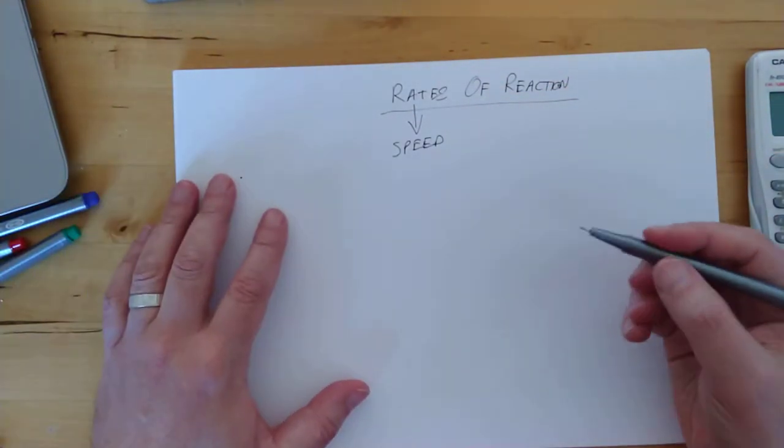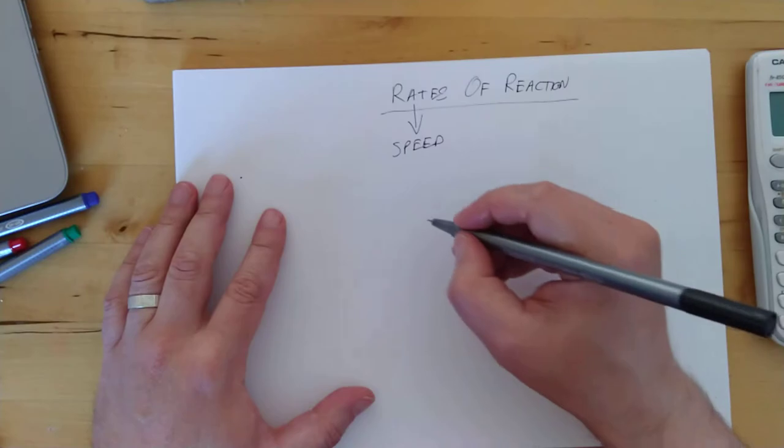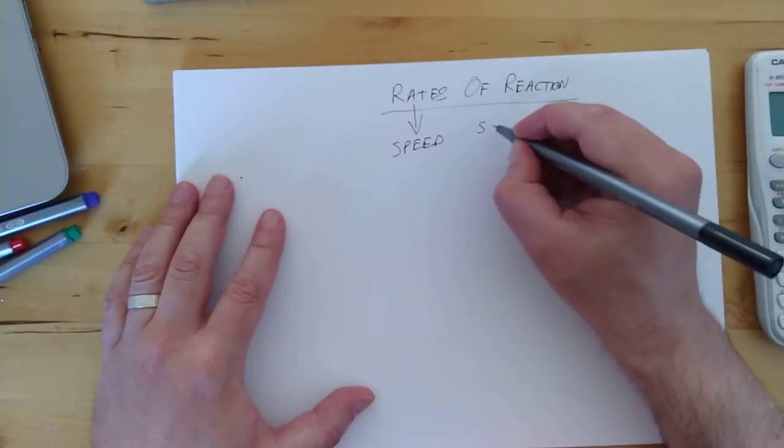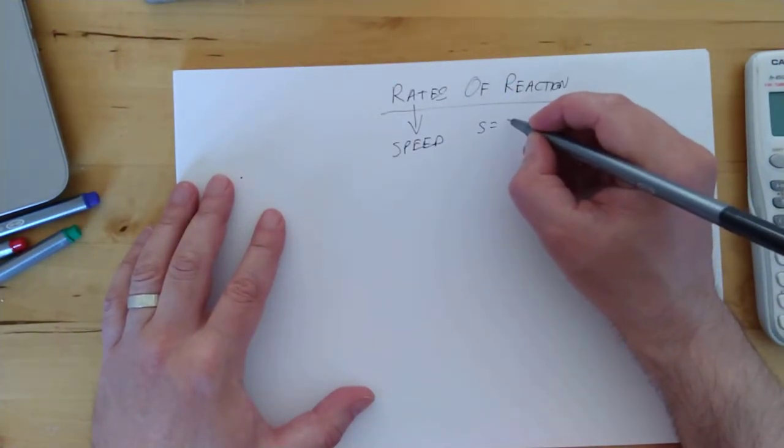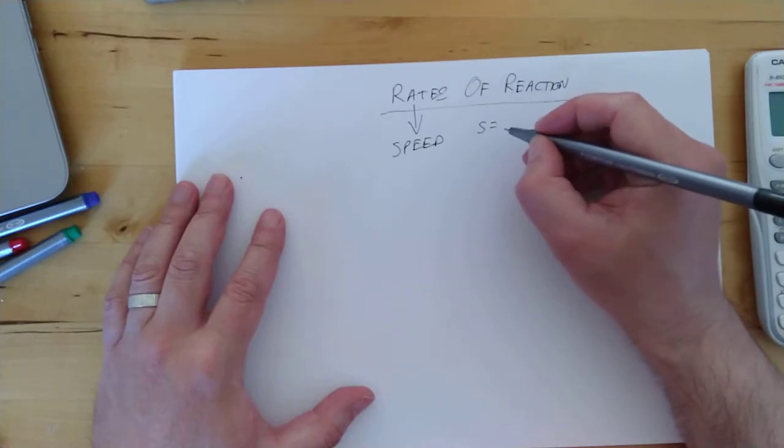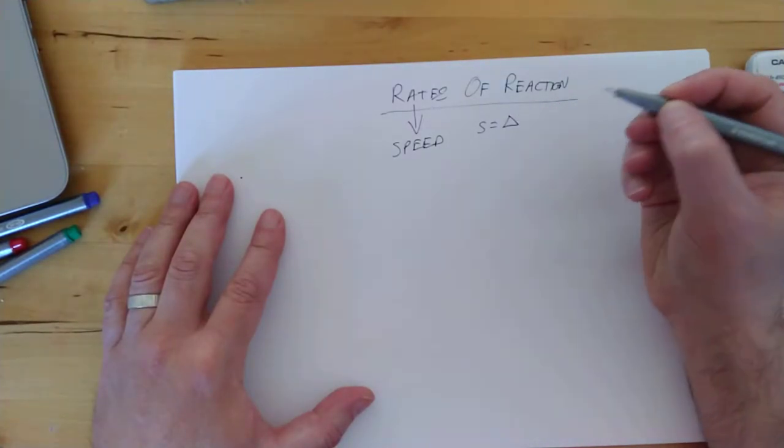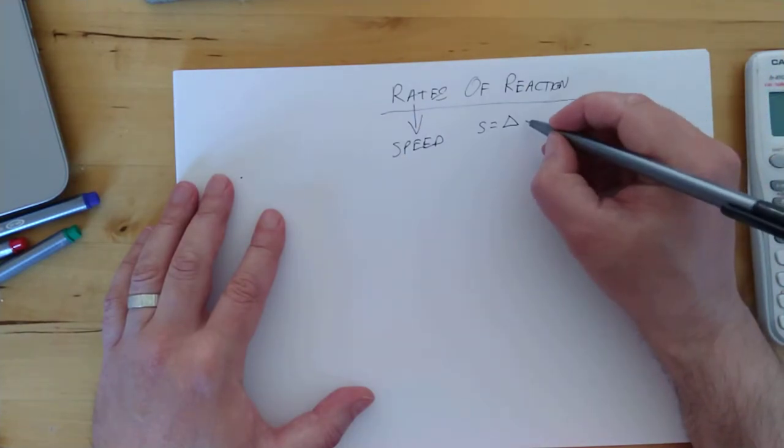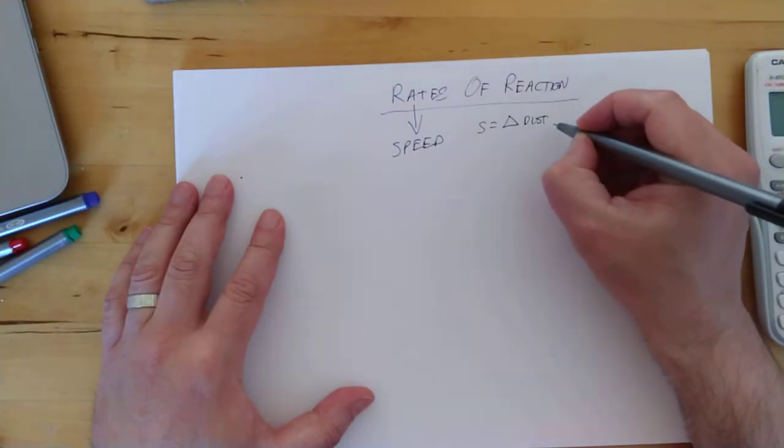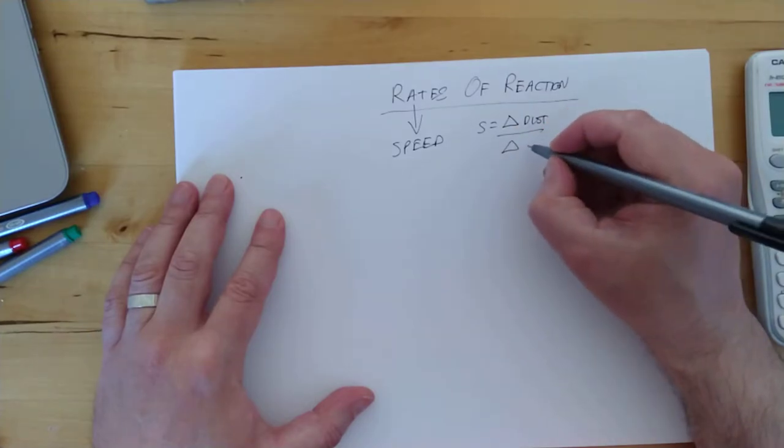And if we steal a little equation from my brothers and sisters in the physics department, then they've got speed equals the change in distance. I'm too lazy to write change in, by the way, so I'm just going to use the Greek word delta for a change in, because that's what it means. So it's a change in distance over a change in time.